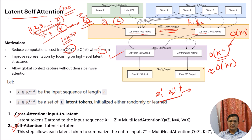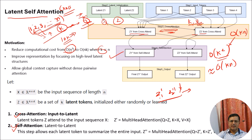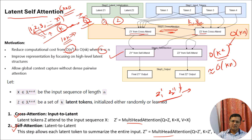We are just considering the single head to explain the process. After that, by applying parallel things, you can do multi-head attention also. In the transformer architecture, we go for multi-head attention. So once you understand the single head and how the system is working, it is very easy to extend to the parallel multi-head attention architecture.